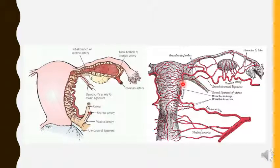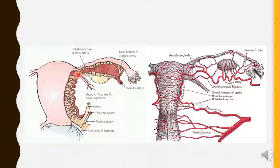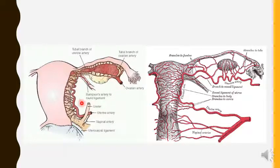The uterine artery finally turns laterally, enters the mesovarium, and anastomoses with the ovarian artery. It supplies the urinary bladder, the terminal part of the ureter, the vagina, the uterus, part of the uterine tube, the ovary through anastomosis, and the contents of the broad ligament.